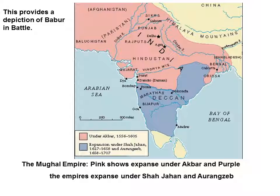By contrast, the Safavids would often refuse to use gunpowder weapons because they believed it was unmanly and unsophisticated. So the Safavids were dealt some crushing defeats, particularly at the hands of the Ottomans, largely because of their refusal to adopt firearms. Instead, they turned to mysticism to try to protect themselves from bullets, which of course did not work too well.